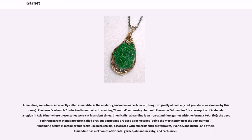Almandine, sometimes incorrectly called almandite, is the modern gem known as carbuncle, though originally almost any red gemstone was known by this name. The term carbuncle is derived from the Latin meaning live coal or burning charcoal. The name almandine is a corruption of Alabanda, a region in Asia Minor where these stones were cut in ancient times. Chemically, almandine is an iron-aluminium garnet with the formula Fe₃Al₂(SiO₄)₃. The deeper transparent stones are often called precious garnet and are used as gemstones, being the most common of the gem garnets. Almandine occurs in metamorphic rocks like mica schists, associated with minerals such as staurolite, kyanite, and sillimanite. Almandine has nicknames of oriental garnet, almandine ruby, and carbuncle.